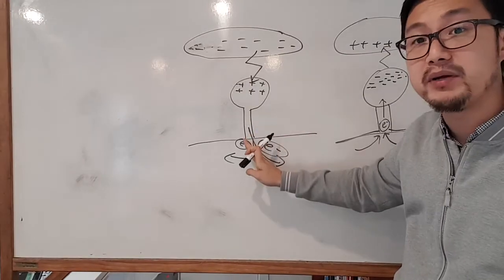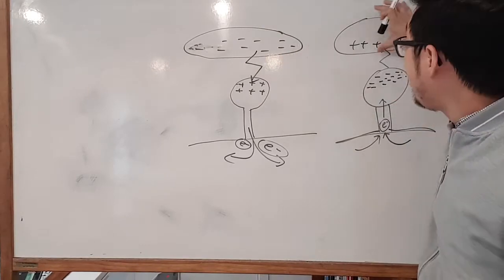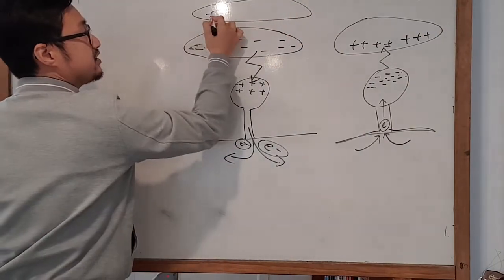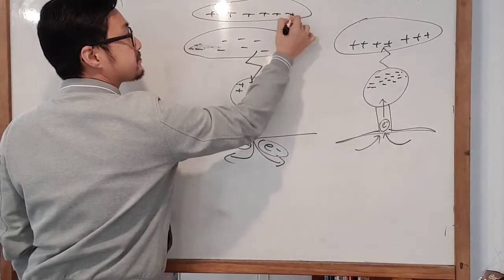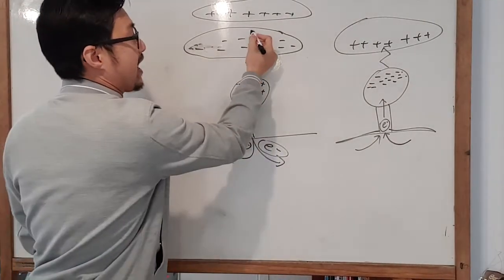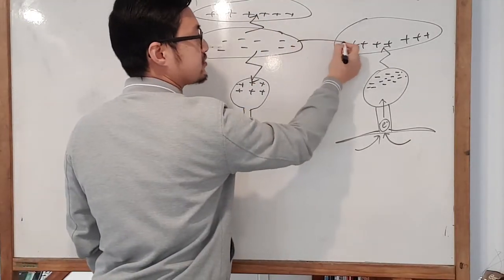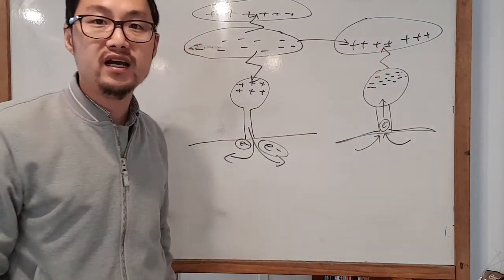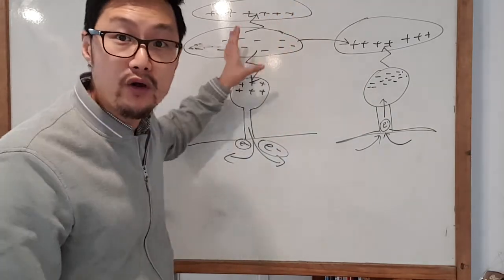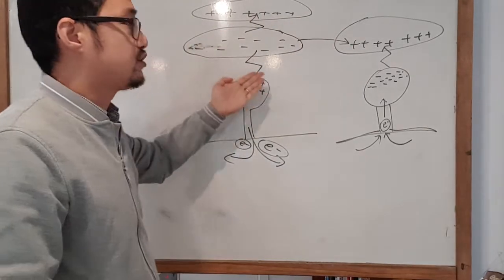Most of the lightning we see involves electrons jumping down from clouds. That's because negatively charged clouds are typically lower. Positive clouds tend to be higher. Sometimes lightning doesn't hit the ground at all — it could go upward from the ground to the cloud, or it could go sideways between clouds, with electrons jumping from one cloud to another.